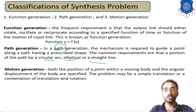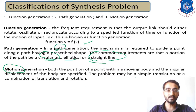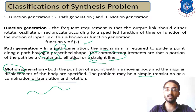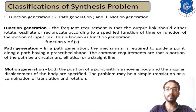The third method is Motion Generation. In motion generation, you are not focusing on the mathematical function or a prescribed path such as a straight line or circular arc. Instead, you are observing the motion itself — whether it is simple translatory motion or a combination of translation and rotation. If you are focusing on how the motion will occur and accordingly designing your mechanism, it is termed as Motion Generation. In this way, the classification of synthesis problems consists of mainly three types.